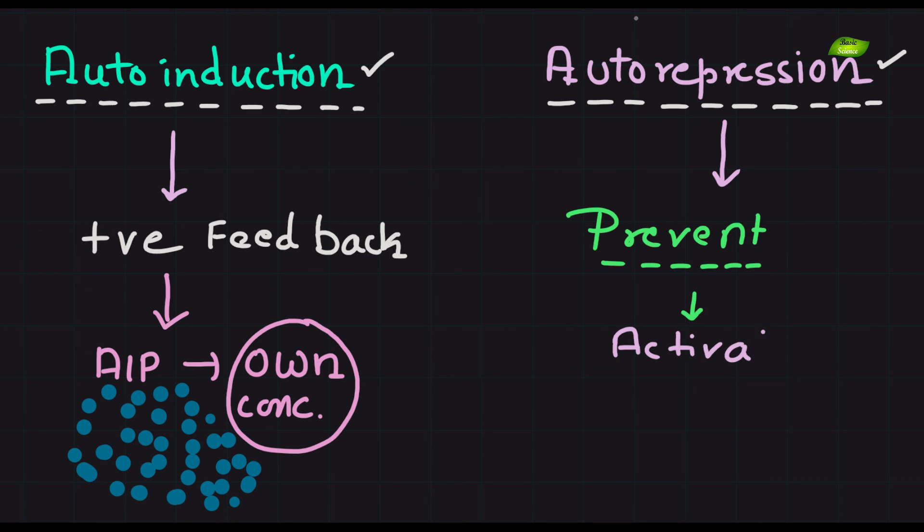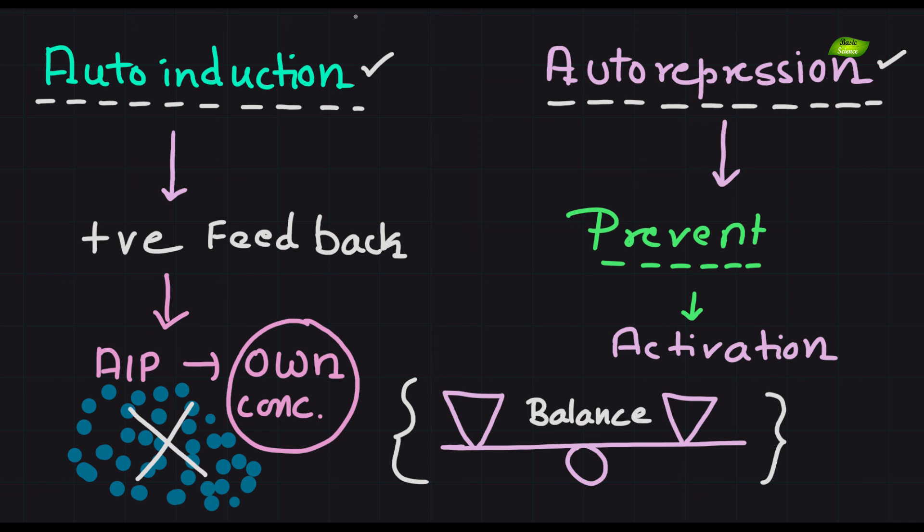On the other hand, auto-repression mechanisms exist to prevent excessive activation of the system. This equilibrium is crucial for fine-tuning the quorum sensing response and avoiding uncontrolled gene expression.